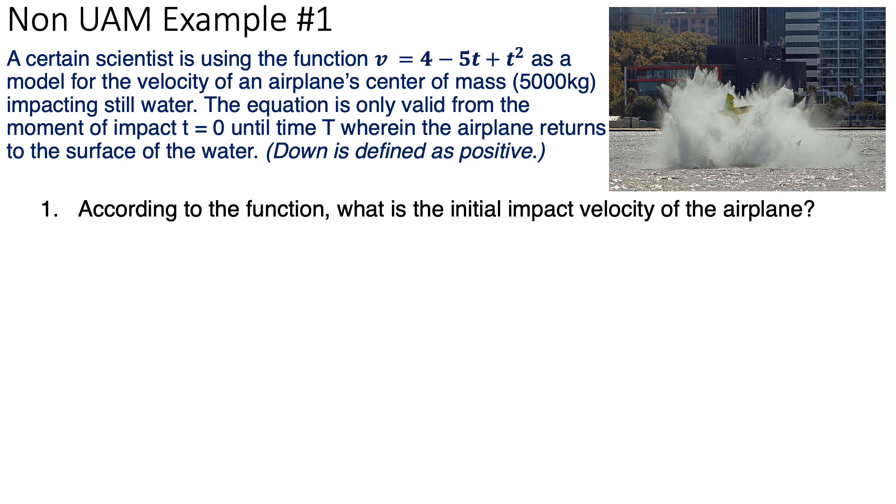Let's answer question number one. What's the initial impact velocity of the airplane? This is really easy because this is the velocity formula. This formula tells you what the velocity is at any given time. Now, initial implies that the time is zero. So, I plug in the number zero and we get the velocity was 4 meters per second the moment the airplane hit the water. It's typically acceptable not to write units when you deal with these type of questions because they get complicated. But we know that the units for velocity is meters per second.